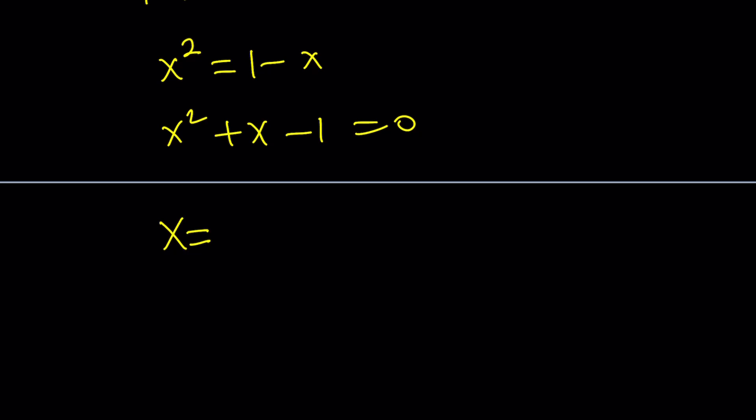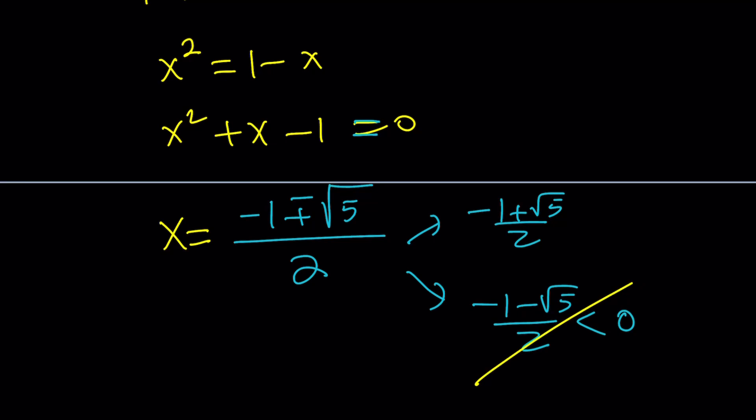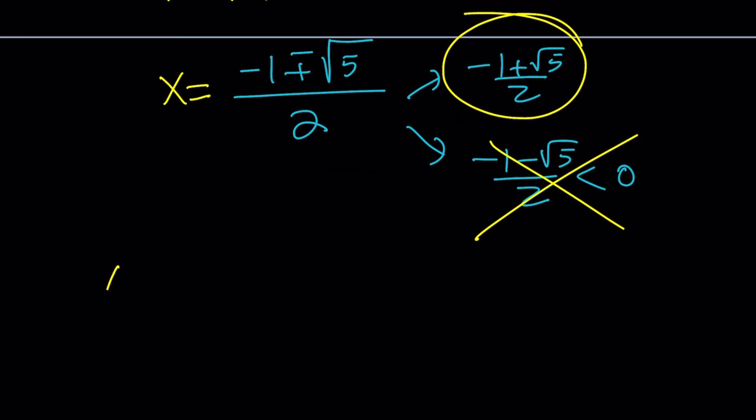Let's go ahead and solve this quadratic equation quickly with the quadratic formula. This is going to be negative 1 plus minus the square root of 1 plus 4, which is 5. And then we get the golden ratio. There are two solutions: negative 1 plus root 5 over 2, and negative 1 minus root 5 over 2. Negative 1 minus root 5 over 2 is less than 0, so we have to get rid of that because the length cannot be negative. X will be root 5 minus 1 over 2.